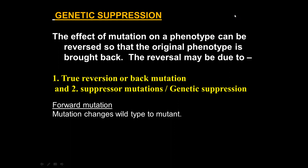What is genetic suppression? The effect of a mutation on a phenotype which is harmful can be reversed so that the original phenotype is brought back. This reversion can be carried out by two processes: one is true reversion, also called back mutation, which is less common; and number two is genetic suppression, also called suppressor mutation.